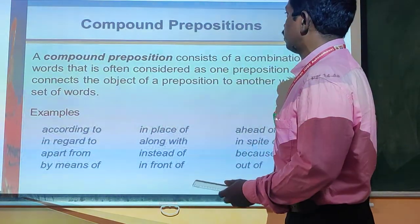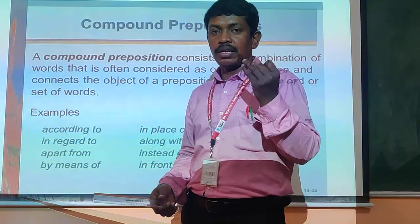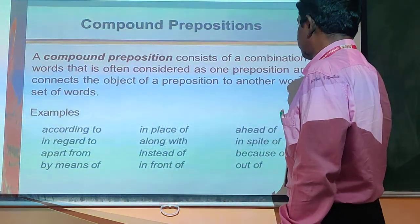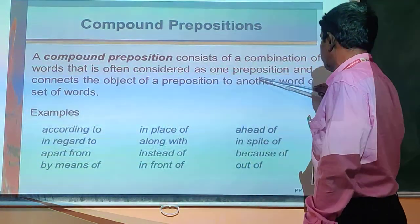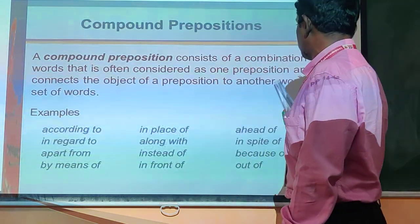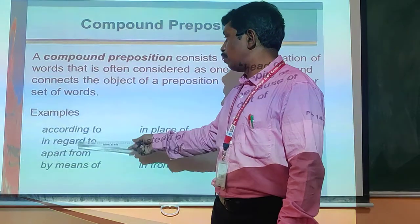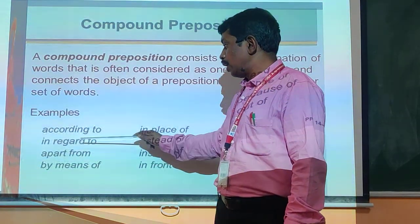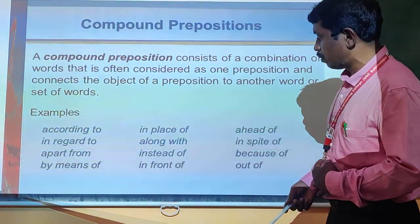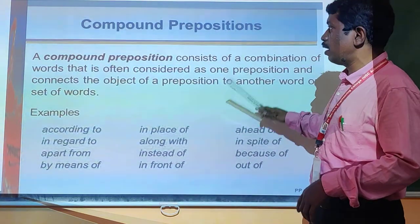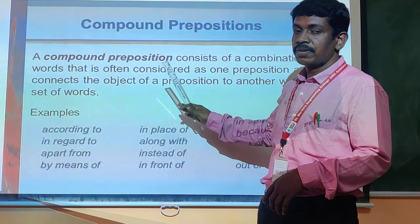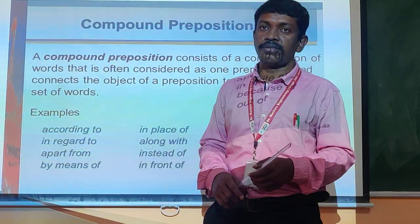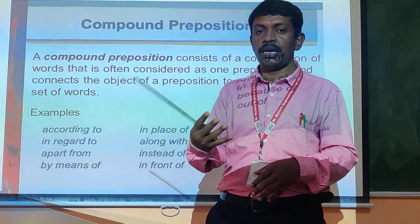The third type is compound prepositions. A compound preposition consists of a combination of words that is often considered as one preposition and connects the object of a preposition to another word or set of words. Examples: according to, in regard to, apart from, by means of, in place of, along with, instead of, different from, ahead of, because of — all these are compound prepositions. So far we have covered the types of prepositions, how many types there are, and what they are. These are very important for everyone. Better be aware of prepositions so that we can improve our language skills. Thank you.